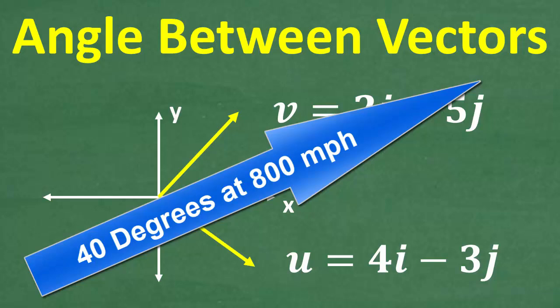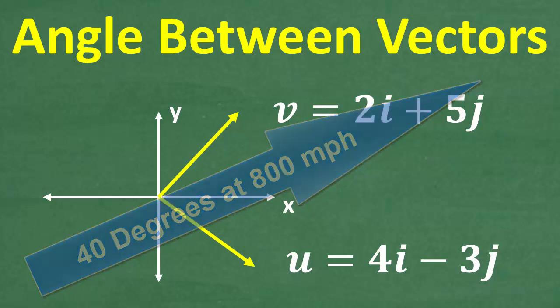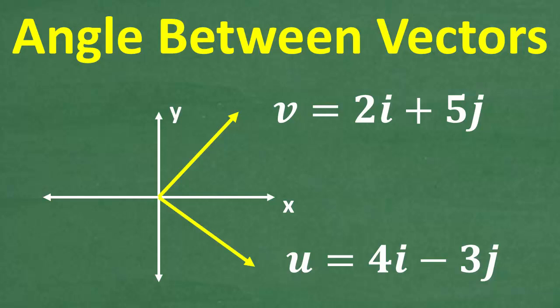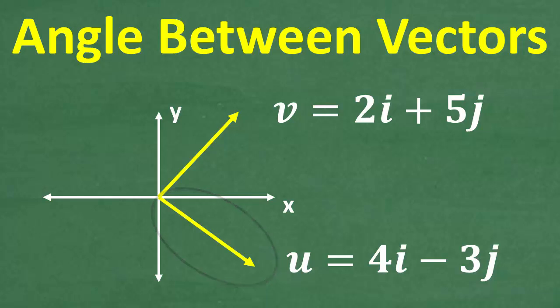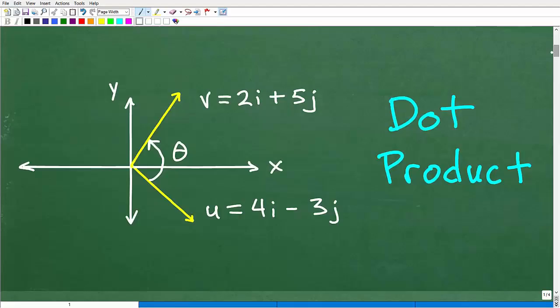So you can see this arrow is representing this particular vector V, and this arrow is representing this particular vector U. What we want to do is find the angle between those two vectors. Let's just give you a basic definition of vectors. All right, so let's get into this — let's find the angle between two vectors and take a look at the problem a little more clearly.